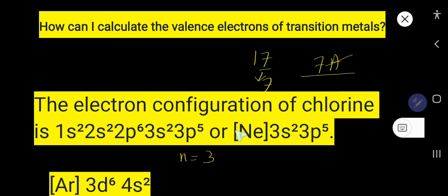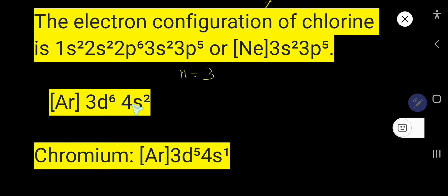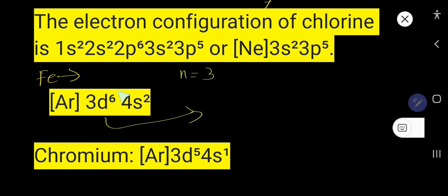For transition metals, you cannot find valence electrons using the group number. In the case of transition metals, you will get an incomplete d subshell, and you need to consider that incomplete d subshell as part of the valence shell.